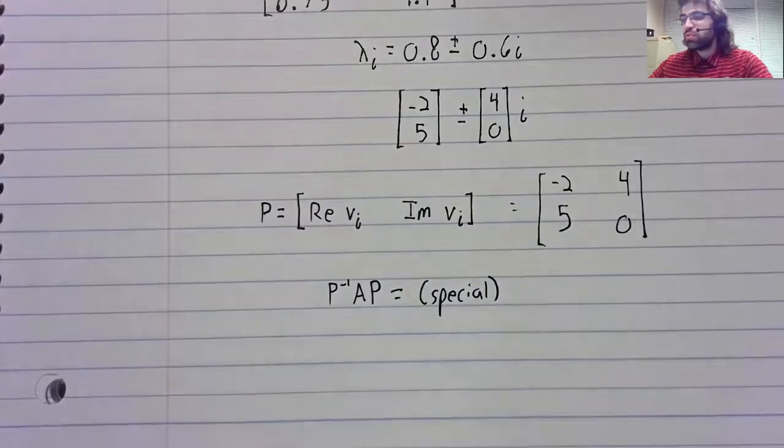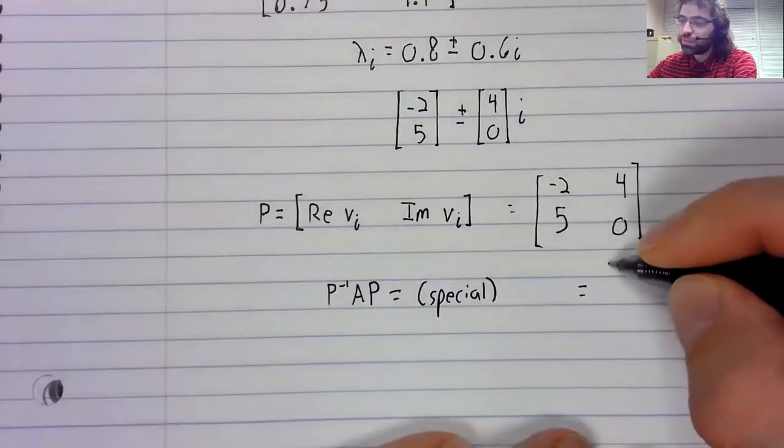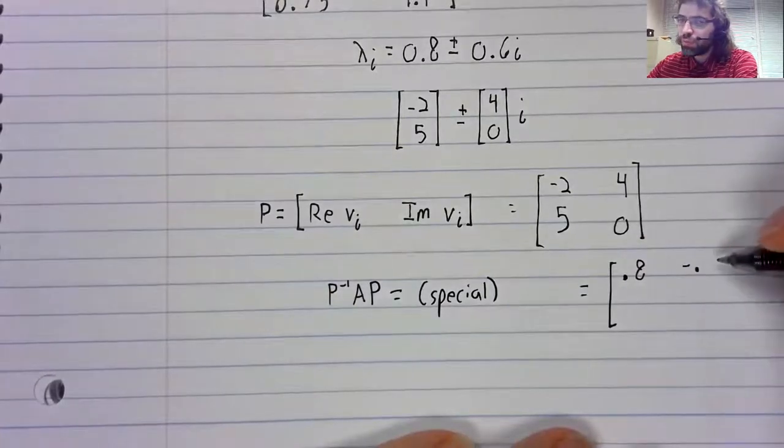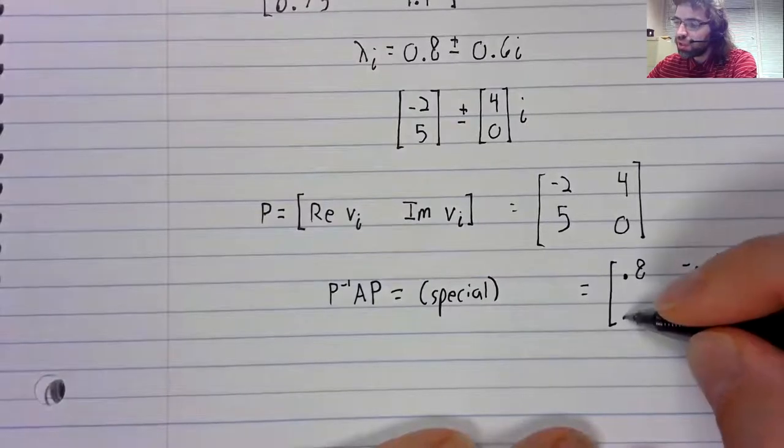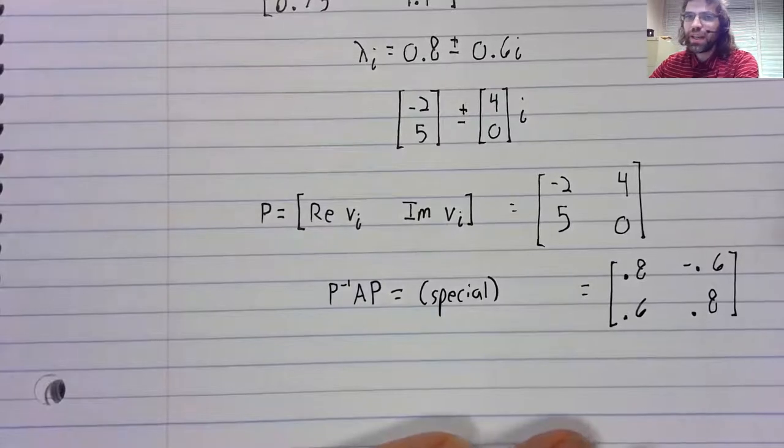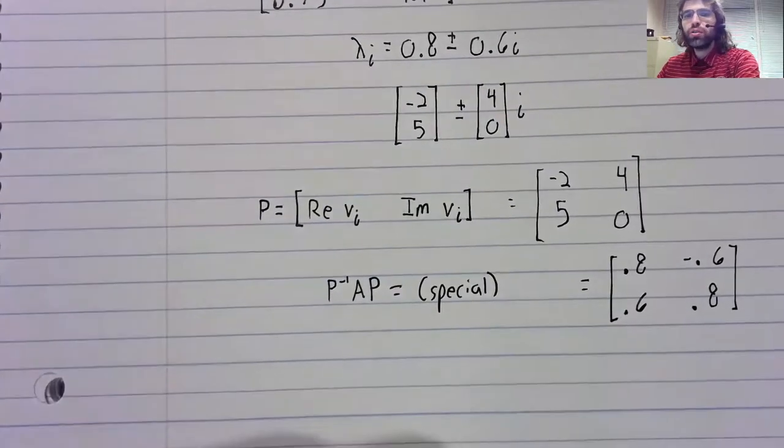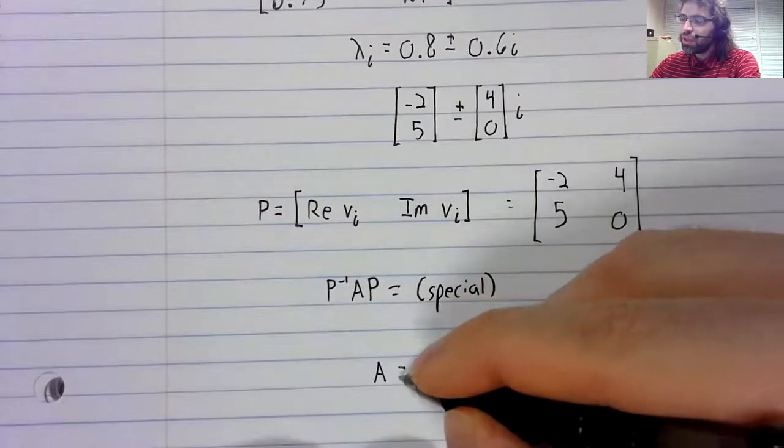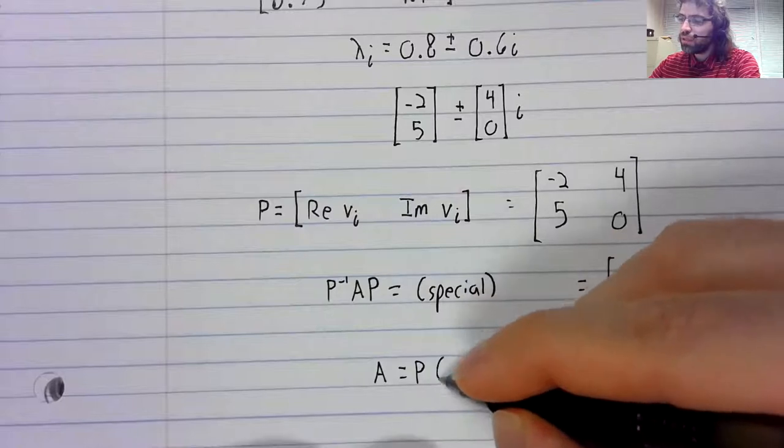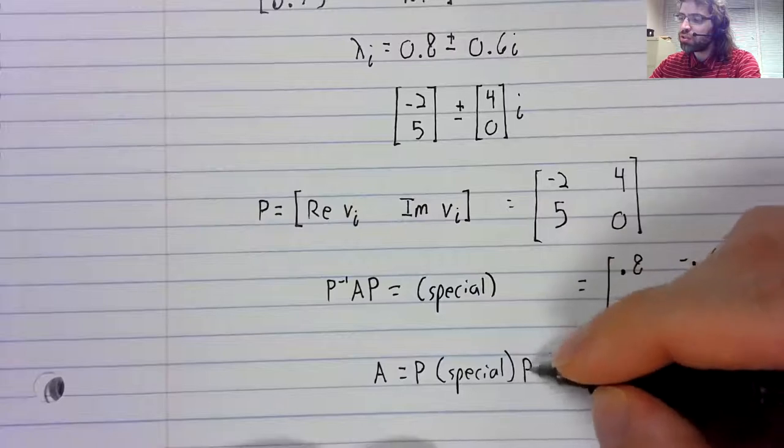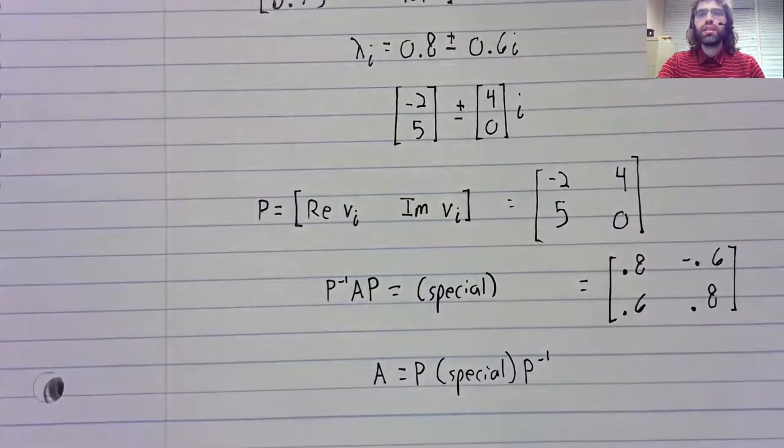In this particular case, 0.8, negative 0.6, 0.6, 0.8, which tells you then that A equals P times a special matrix times P inverse.